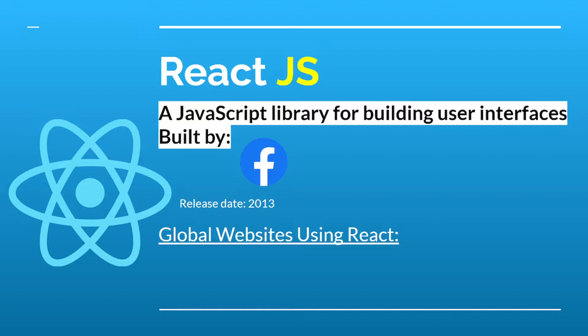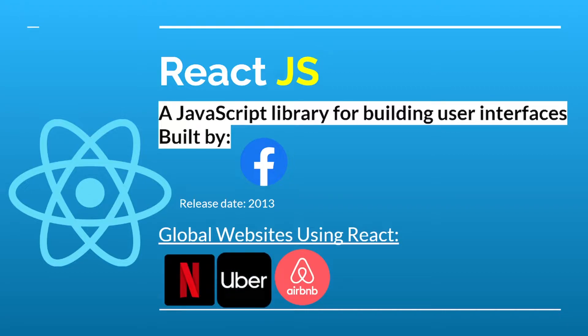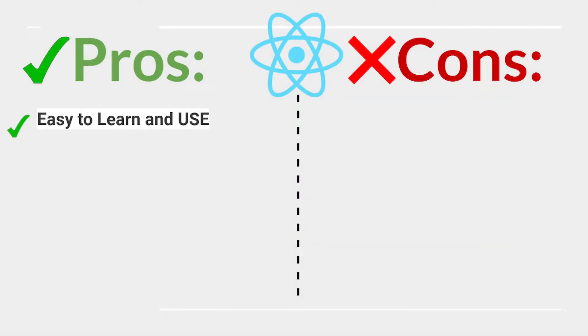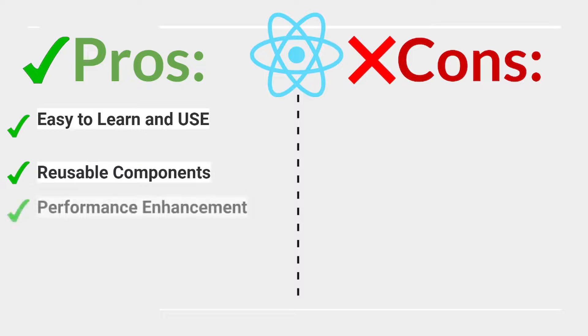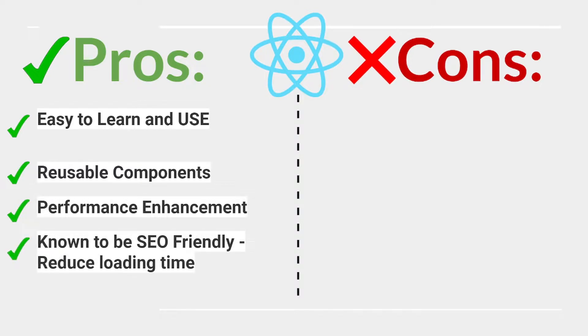React.js is a JavaScript library for building user interfaces, built by Facebook. Note: this is a library, but it's included here because it's so popular. Released in 2013, global websites using React include Uber, Airbnb, and Netflix. Pros: easy to learn and use, reusable components, performance enhancement.